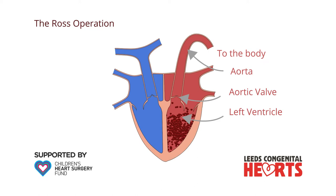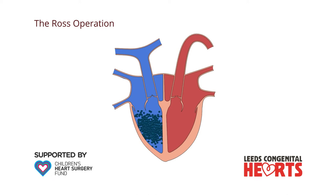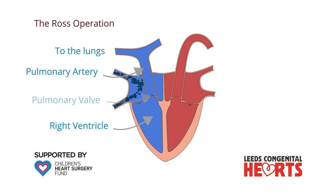On the right side of the heart, blood is pumped out of the right ventricle to the lungs via the pulmonary artery. The pulmonary valve opens to let blood out and closes to prevent blood returning to the heart. In a ROS operation,